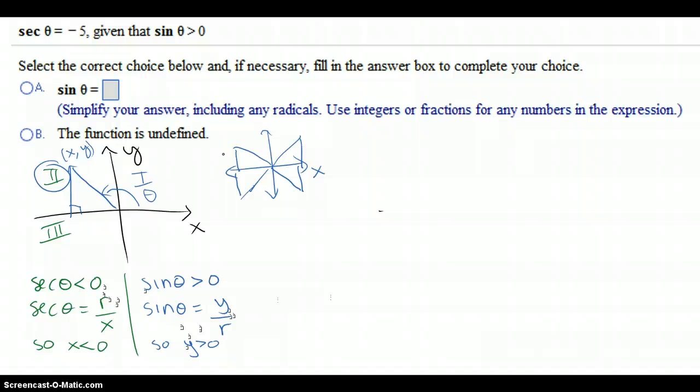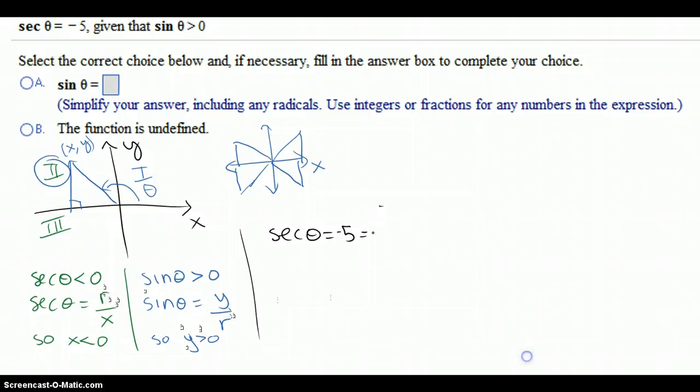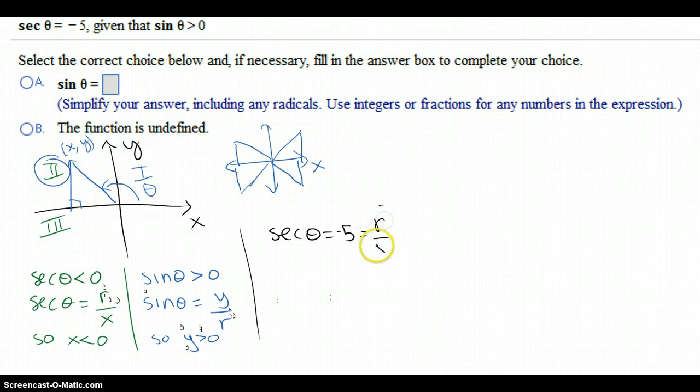Getting back to the problem. Okay, so now we know that to find the value of our other trigonometric functions, we are going to use the fact that secant of theta is negative 5. Now, by the way, now we're going to use the negative 5.